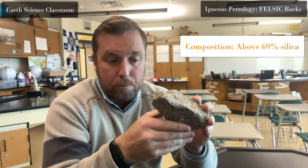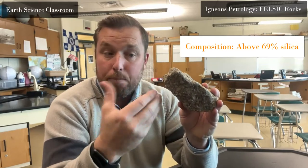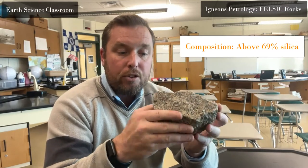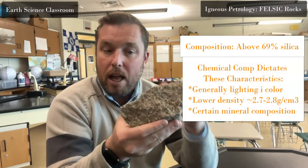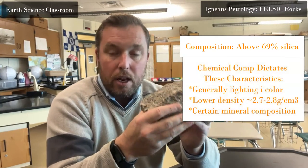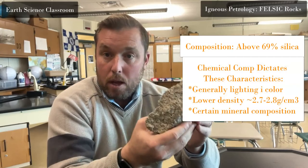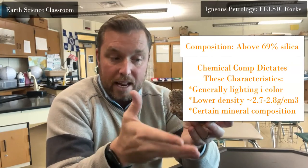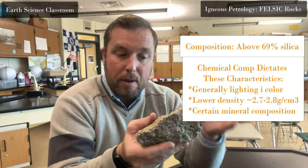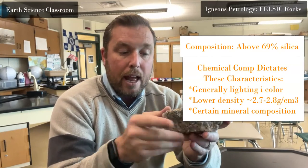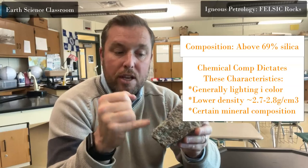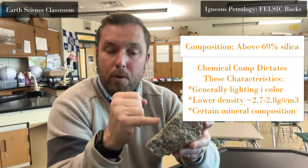Felsic rock is defined as any rock that is above 69% silica, with variations up to about 77% silica. This creates a lighter-colored igneous rock that is also not as dense as mafic rock. It has a lot of coloration and variation depending on its mineral content.